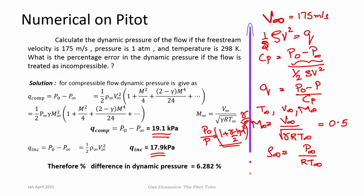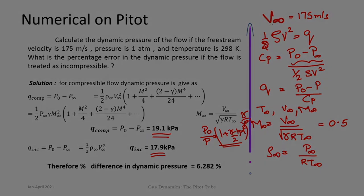Once the flow becomes compressible, one has to use compressible flow equations and stagnation processes to calculate the velocity or Mach number from the measurement of stagnation pressure and static pressure, and not by using the incompressible Bernoulli equation. That point is made clear here. In the next class we will look at the star condition — stagnation conditions and star or sonic conditions are important critical conditions for a gaseous flow. Thank you.